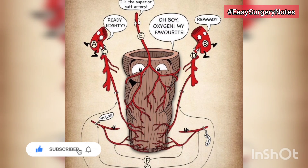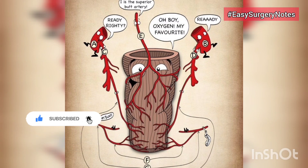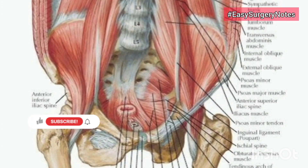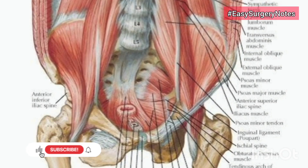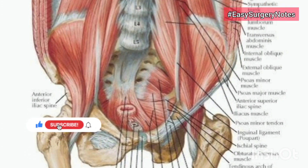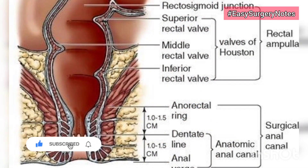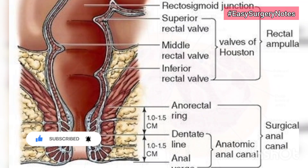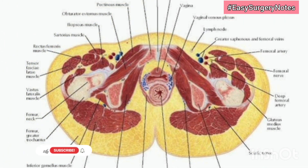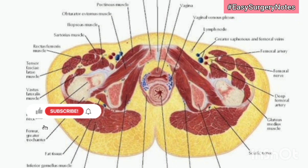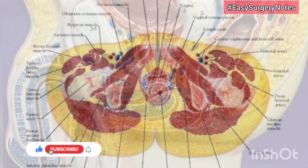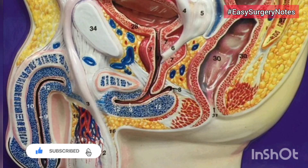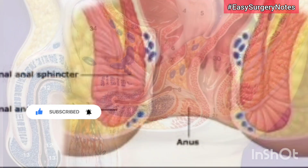Interior of the anal canal — upper part: it extends from the anorectal ring to the pectinate line and is about 15 millimeters long. It is the mucous part, lined by columnar epithelium. The mucous membrane shows anal columns of Morgagni, anal valves, anal sinuses, anal papillae, and the pectinate line. Anal glands are four to eight in number; each has a direct opening into the apex of an anal crypt, and occasionally two glands open into the same crypt.